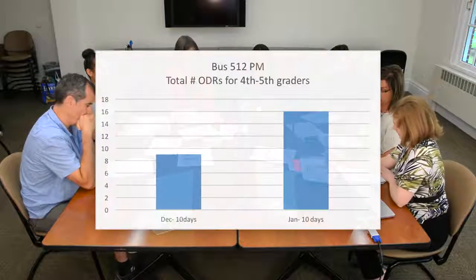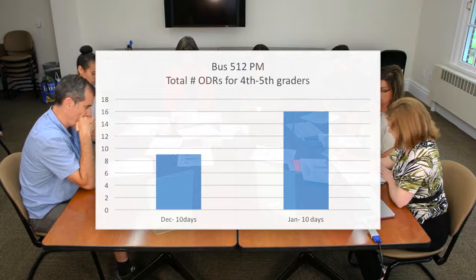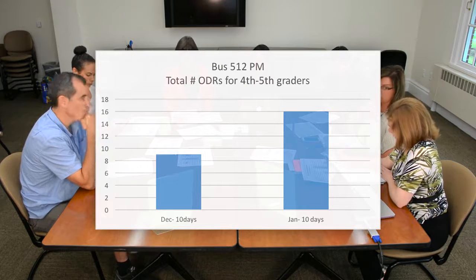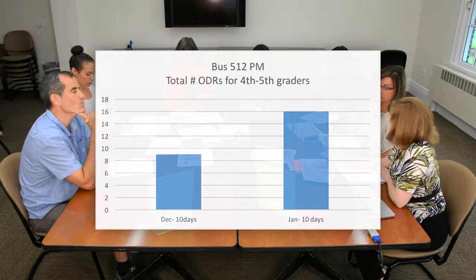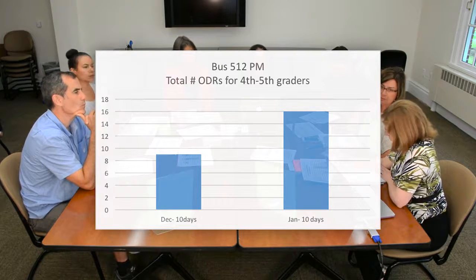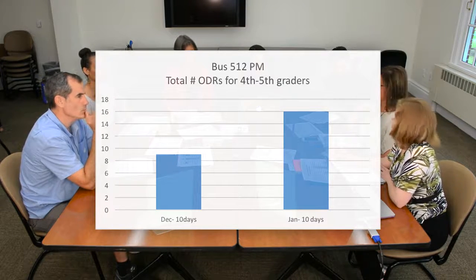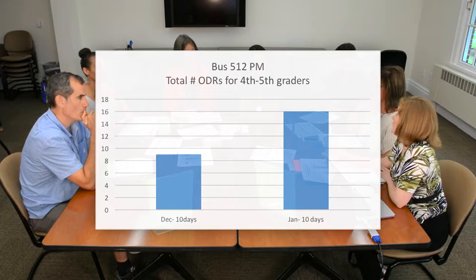How are we doing? What do our current data look like? We really haven't seen much change since our last meeting. We still have way too many incidents on that bus — our total is 16 since we returned to school from the break, which is up from 9 at our last meeting, so our average is between 1 and 2.